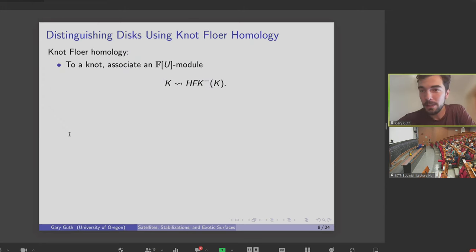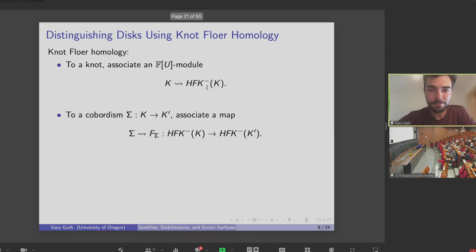So the main tool we use to prove this result is knot Floer homology, which we've heard about a fair amount this week, so I won't say too much. Recall, the structure is given a knot. There's some associated bigraded U module, HFK minus. And if I have a cobordism between two knots, then there's an associated map between the knot Floer homologies.